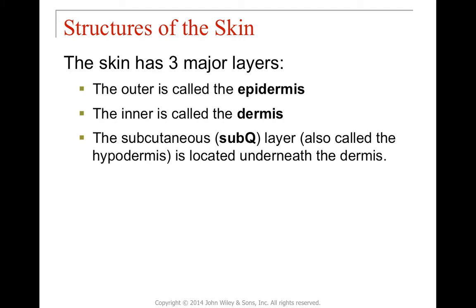There are three major layers of the skin. The outer layer is the epidermis — you may have heard the joke 'your epidermis is showing,' and that's always true if you're showing any skin. The next layer down is called the dermis, and the subcutaneous layer is also known as the sub-Q layer, or hypodermis, found underneath the dermis. For this class, we'll call them the epidermis, the dermis, and the sub-Q layer.